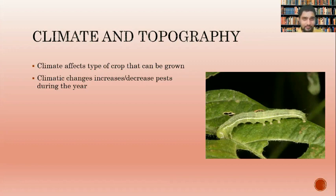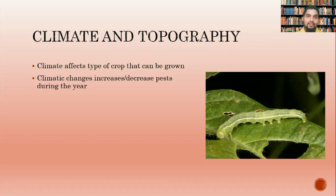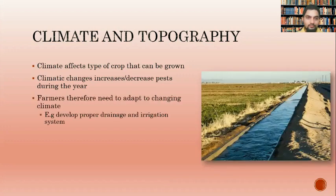Farmers must be aware of these things and adapt to constantly occurring changes. One of the major changes is climate change — our entire climate system is changing, and that is a big challenge on its own. Farmers need to develop a proper system of drainage and irrigation to ensure that crops always have a balance of water.